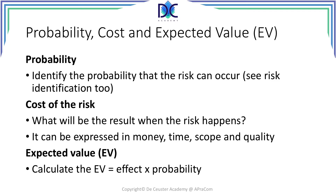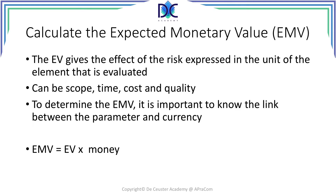For example, there is a 10% probability that the project will be 10 days late. This means that the expected value is one day. We have a 10% probability that the project will cost one hundred thousand euro more due to this risk — 10% of one hundred thousand is ten thousand euro — also an expected value.